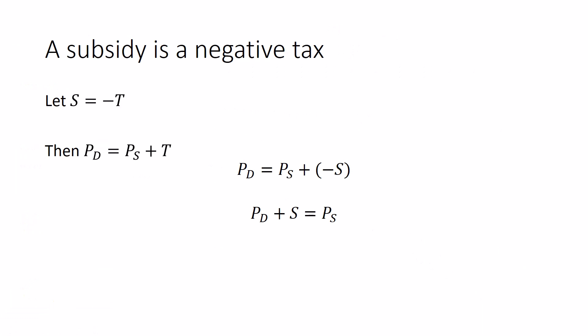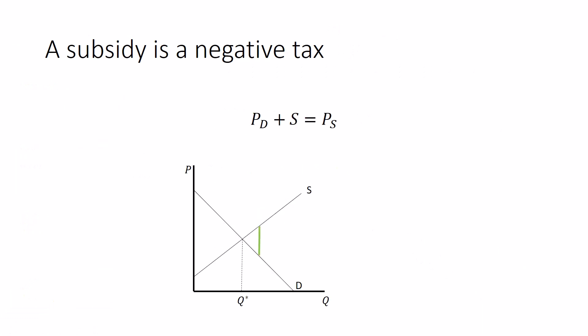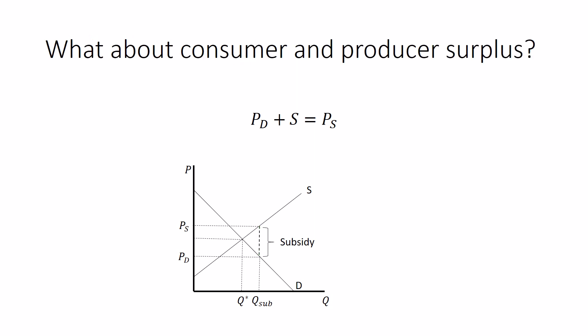But the difference, because it's the government giving money instead of the government taking money, the sellers will receive more than the demanders actually pay. And so, that's going to lead our market to consume, to produce and consume more of the good than it would in equilibrium. Something like this. The wedge is on the other side. Where our supply price is greater than our demand price. Here's our cue of the subsidy. There's the demand price down there. There's the supply price up there. And the gap between them is the subsidy itself.